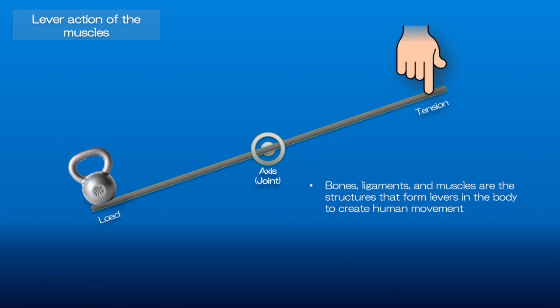In simple terms, a joint forms an axis or fulcrum, and the muscles crossing the joint apply the force, as you see as a hand here, to move a load that we have here.